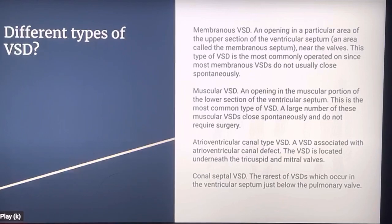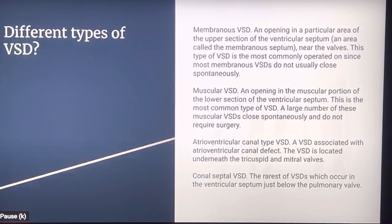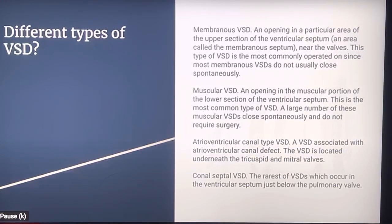Atrioventricular canal type VSD is a VSD associated with an atrioventricular canal defect. The VSD is located underneath the tricuspid and mitral valves. The canal septal VSD is the rarest of VSDs, which occurs in the ventricular septum just below the pulmonary valve.